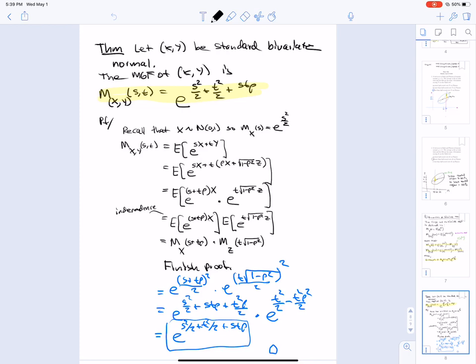So now we start with the MGF of xy. We substitute what y is. And then we rearrange it so that we have the product of exponentials here. And here I'm going to use property of independence. So exponential of s plus t rho times x is independent of e to the t square root of 1 minus rho squared z. And so you can just split the expectations.